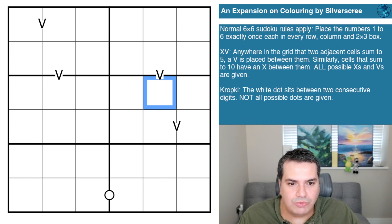Kropki - the white dot sits between two consecutive digits, and not all possible dots are given. It's a fairly straightforward set of rules, easy to understand and comprehend.